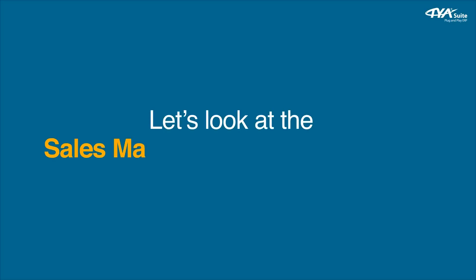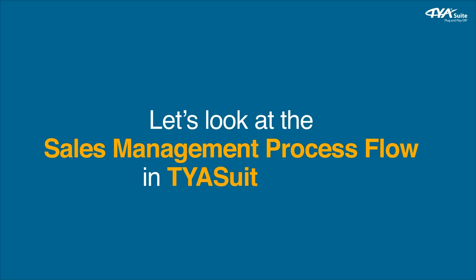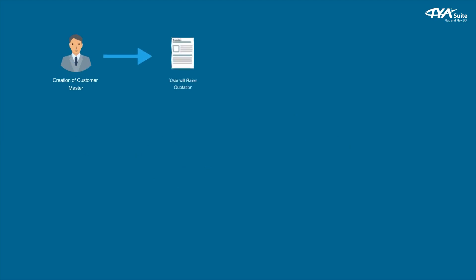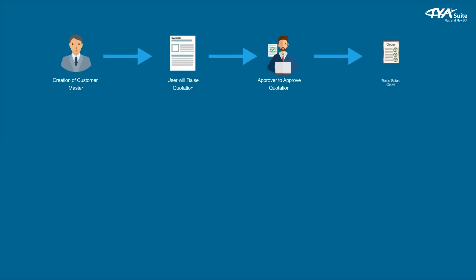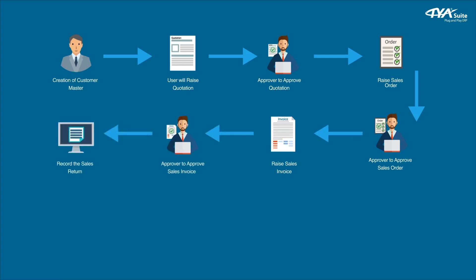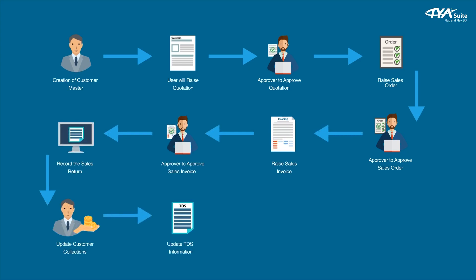Let's look at the sales management process flow in TYASuit ERP: creation of customer master, user will raise quotation, approver to approve quotation, raise sales order, approver to approve sales order, raise sales invoice, approver to approve sales invoice, record the sales return, update customer collections, update TDS information, and get real-time updates on customer balance reports and various other reports.